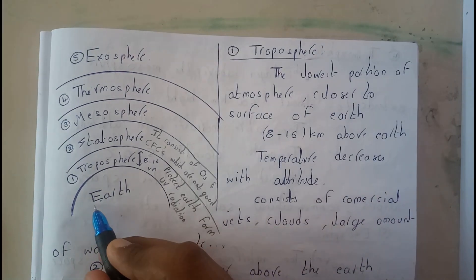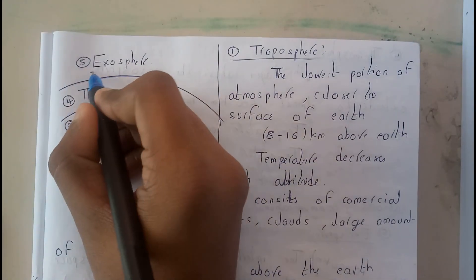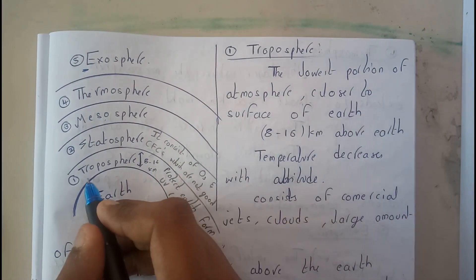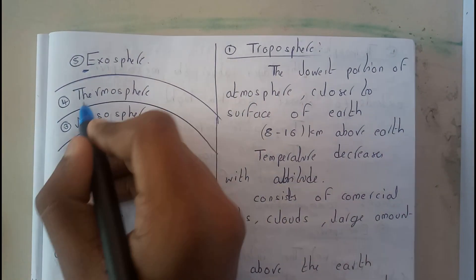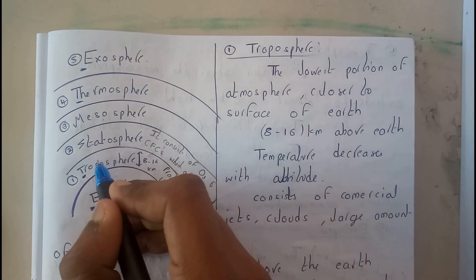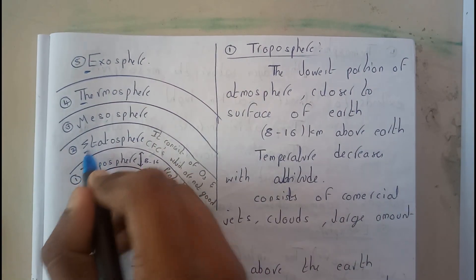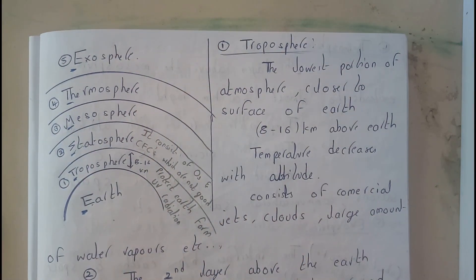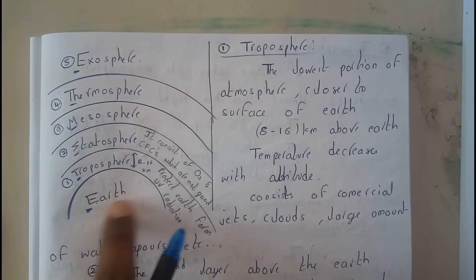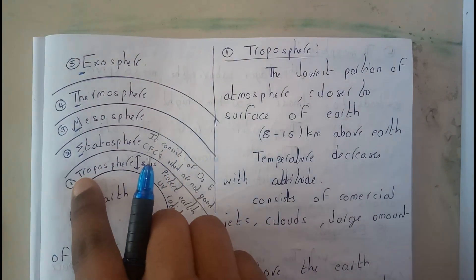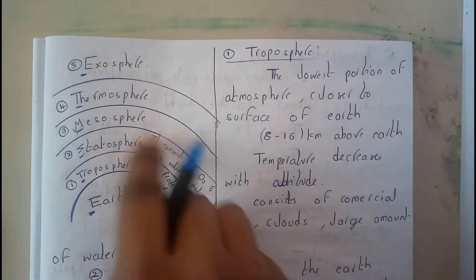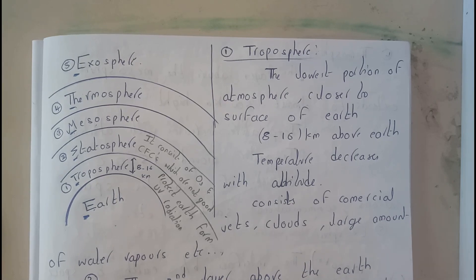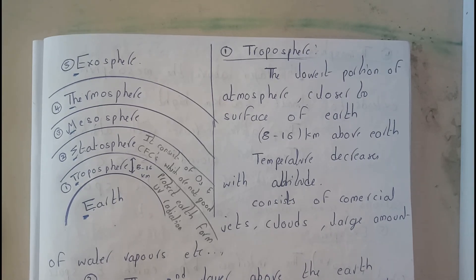The first layer starts with troposphere and the last is exosphere. The second to last is thermosphere. You know SMS, right? So S, M — stratosphere, mesosphere. I remembered it like that. It's all up to you. So: Earth, Exosphere, Troposphere, Thermosphere, Stratosphere, Mesosphere.